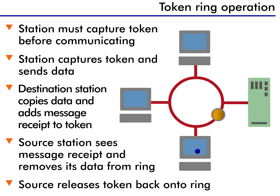While holding the token, this station generates its data onto the network. This data circulates around the ring, and the destination station recognizes the information is addressed to it. Now, and this is important, the destination station does not remove the information from the ring — it only takes a copy of the data.